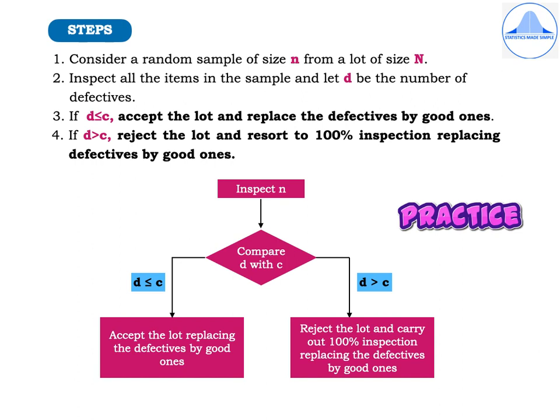First, consider a random sample of size n from a lot of size N. Next, inspect all the items in the sample and let d be the number of defectives. If d is less than or equal to c, then you accept the lot and replace all the defectives by good ones. If d is greater than c, you reject the lot and resort to 100% inspection, replacing the defectives by good ones.